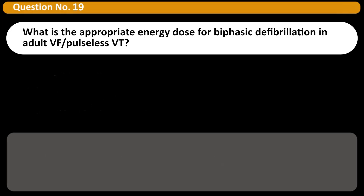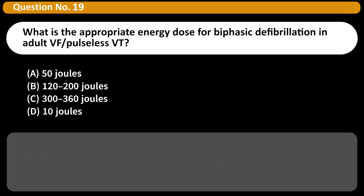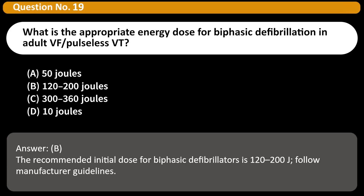What is the appropriate energy dose for biphasic defibrillation in adult VF/pulseless VT? A. 50 joules. B. 120 to 200 joules. C. 300 to 360 joules. D. 10 joules. Answer: B. The recommended initial dose for biphasic defibrillators is 120 to 200 joules; follow manufacturer guidelines.